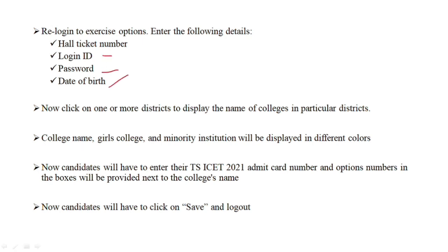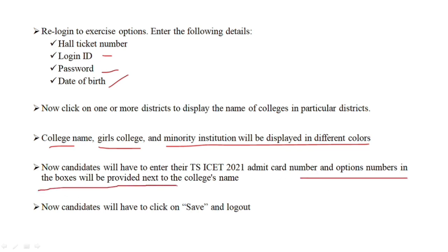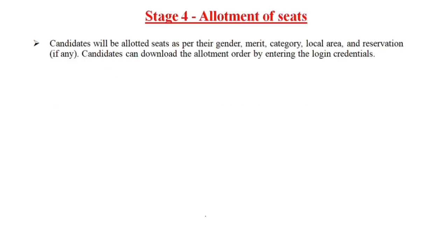You can click on one or more districts, and the colleges in those particular districts will be displayed. Click on a college name to select it — minority institutions will be displayed in different colors. Boxes are provided next to the college names for preference entry. Enter your details in those boxes to finalize your option entry choices.